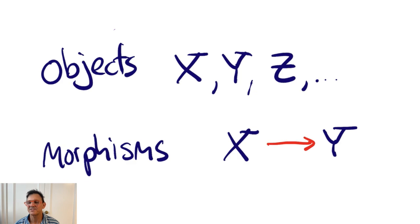In algebra, we study objects like groups, and the morphisms between them are group homomorphisms. In linear algebra, we're interested in vector spaces, and the morphisms are linear maps between them. In topology, the objects are topological spaces, and the morphisms between them are continuous functions.